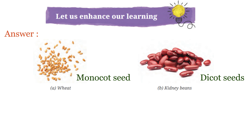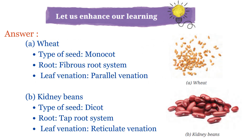To answer this question, we use a simple trick: diureta and mopafi. Diureta stands for dicot, reticulate venation, taproot system and mopafi stands for monocot, parallel venation, fibrous root system. Applying this trick: wheat is a monocot seed, so it has parallel venation and fibrous roots. Kidney beans are dicot seeds, so they have reticulate venation and tap roots.